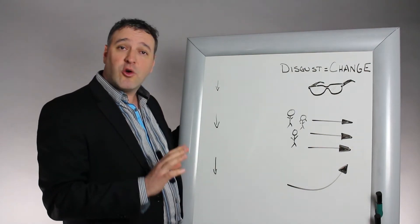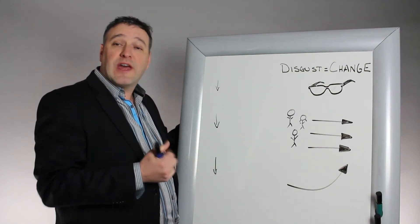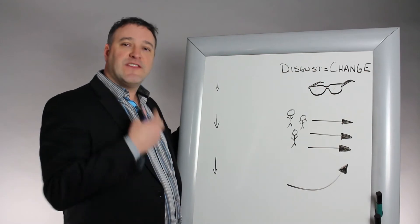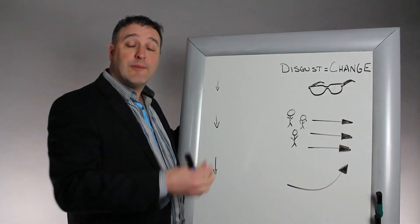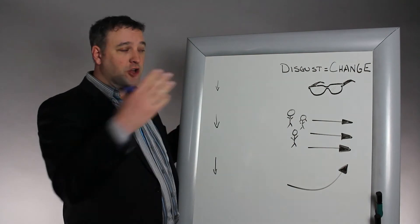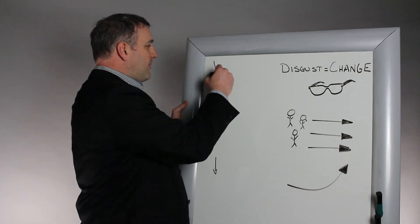You've got a guiding coalition of people who have enough power to do that in that organization, and now you need them to work together towards a common goal and be able to communicate that common goal to the rest of the organization. And that's where vision comes in.